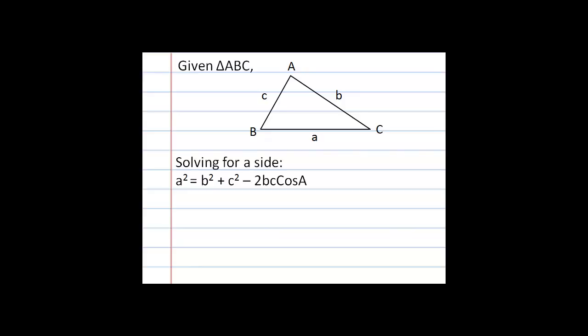The cosine law can be written for any of the three sides. For side a: a² = b² + c² − 2bc·cosA, meaning you're given sides b and c and the contained angle A. For side b: b² = a² + c² − 2ac·cosB. And for side c: c² = a² + b² − 2ab·cosC. You can pause the video now to copy this down.